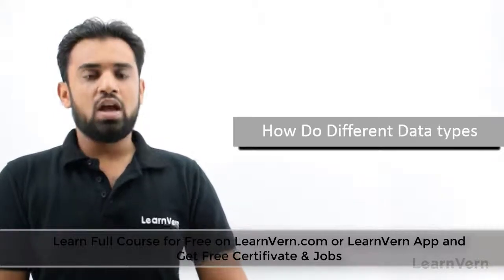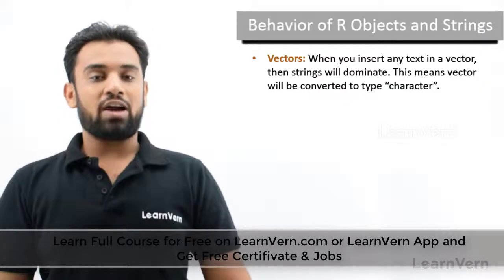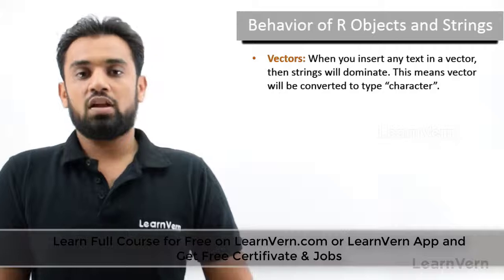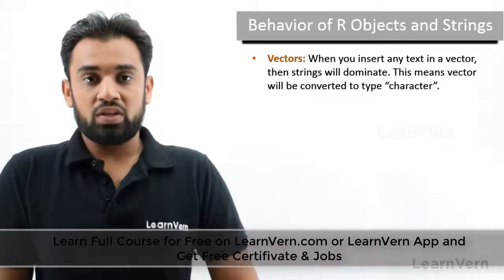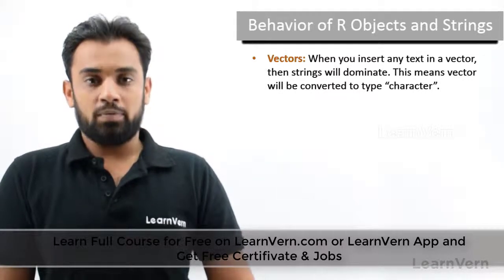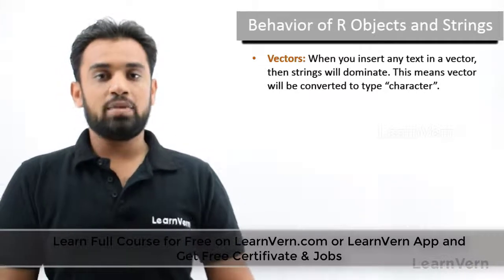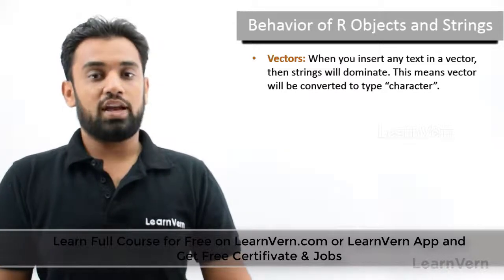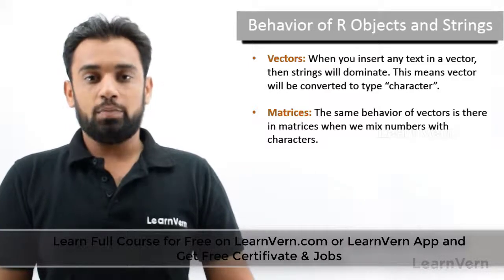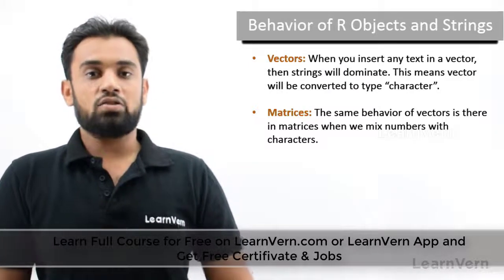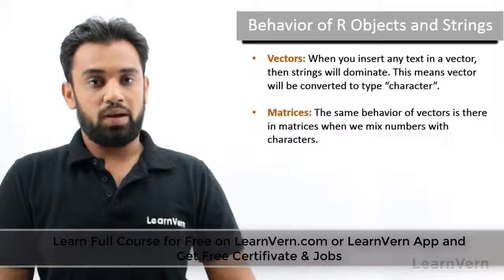We had seen this in previous chapters but we'll repeat it here. For vectors, all elements must be of the same type. So if you have five elements — four numeric and one character — the entire vector will be coerced to character type. The same is true for matrices: if you have ten elements and a single one is of character type, the entire matrix will be coerced to character.